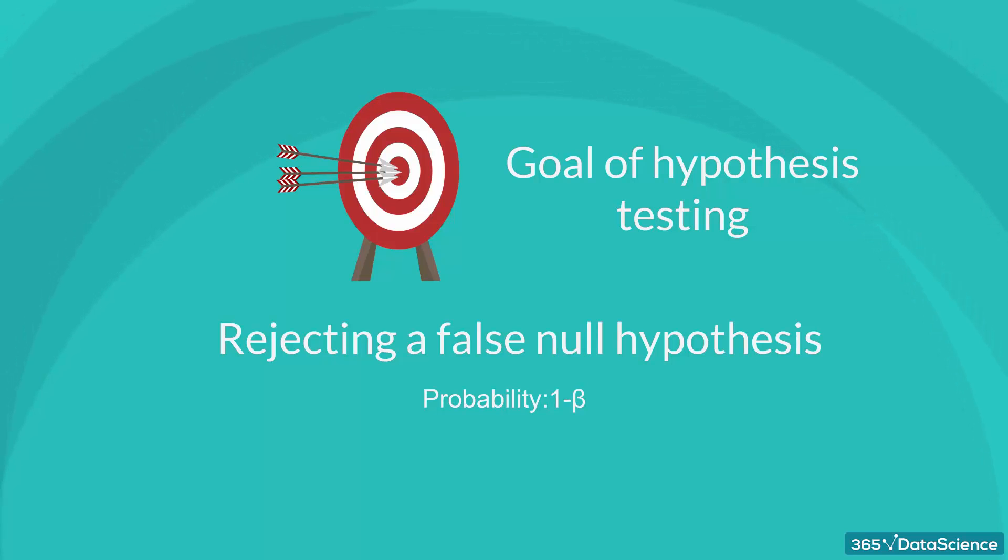Therefore, 1 minus beta is called the power of the test. Generally, researchers increase the power of a test by increasing the sample size.